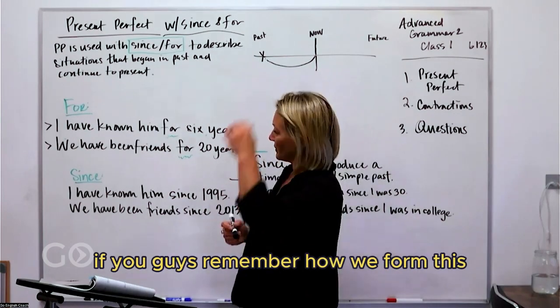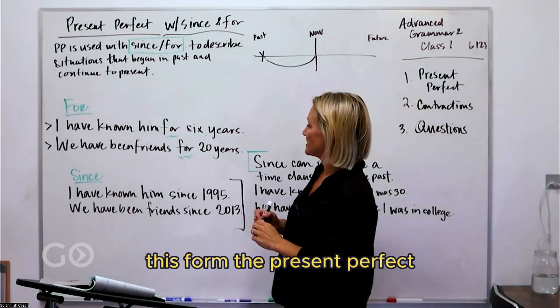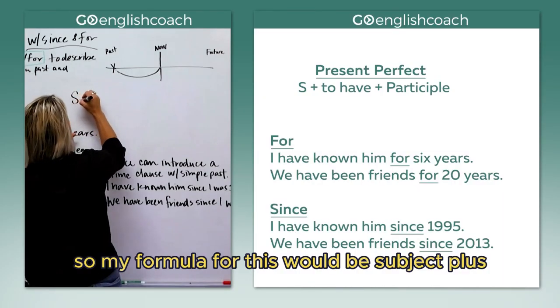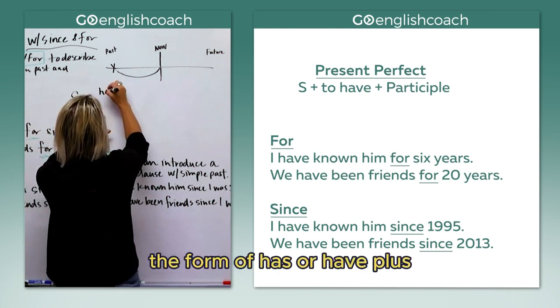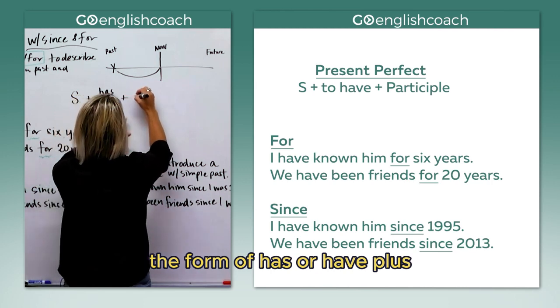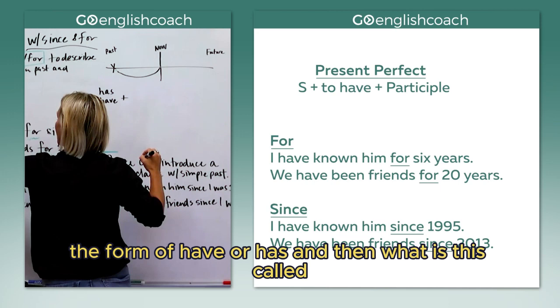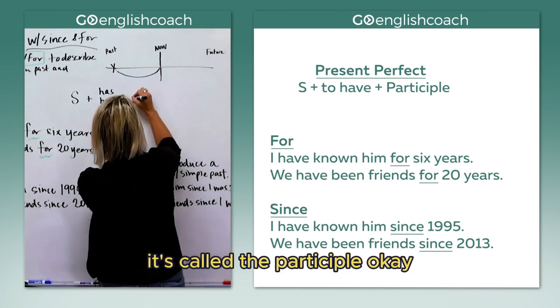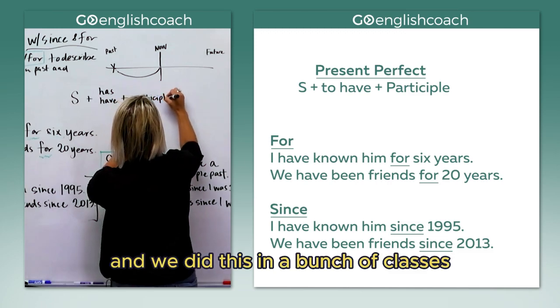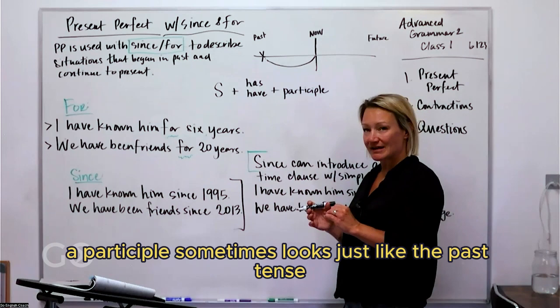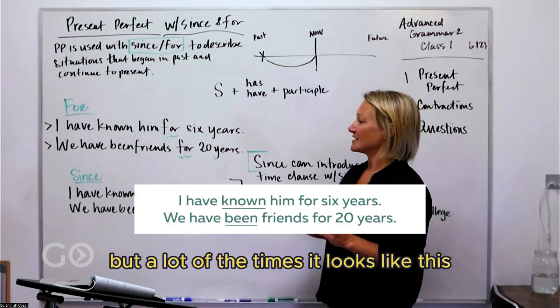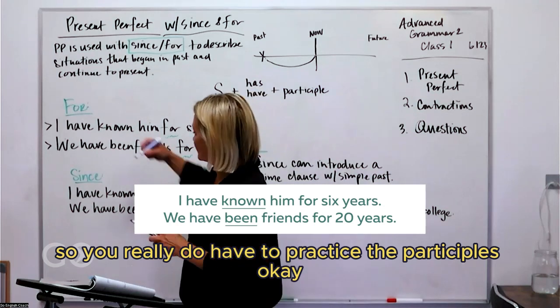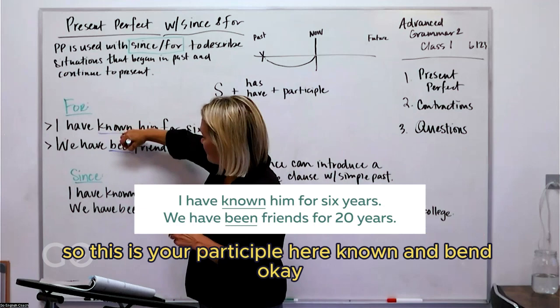Let's back up just a little bit. If you guys remember how we form this form, the present perfect, my formula for this would be subject plus the form of has or have plus, and then what is this called? Do you guys remember what that form of the word is called? It's called the participle. So a participle sometimes looks just like the past tense with the ed form, but a lot of the times it looks like this, where these are both irregular forms. So you really do have to practice the participles. So this is your participle here, known and been.